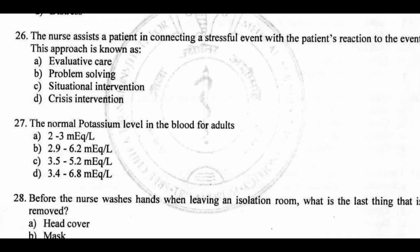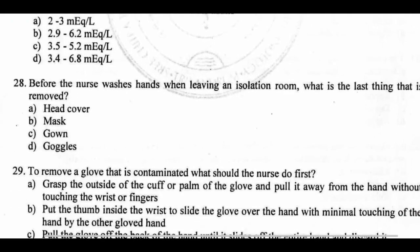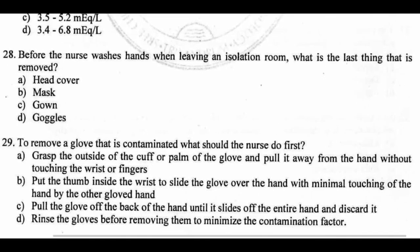Question 27: The normal potassium level in blood for an adult. Right answer C: 3.5 to 5.2 milliequivalents per liter.